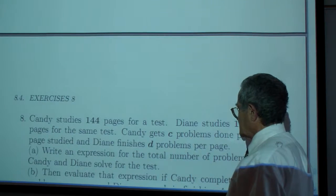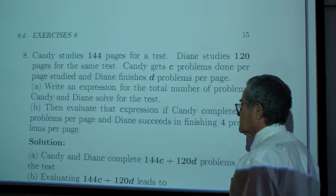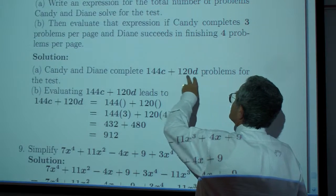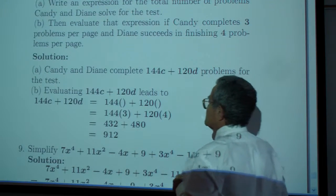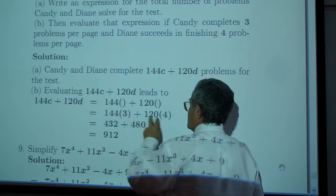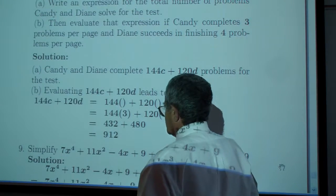Now the Candy problem: Candy and Diane complete 144c plus 120d problems for the test. For c and d, populate with 3 and 4, crank it out. You're supposed to get 912.